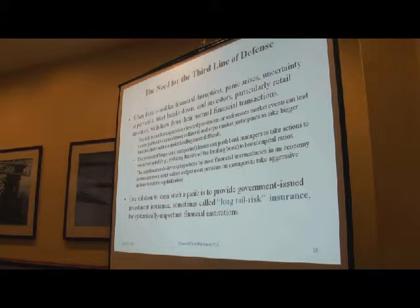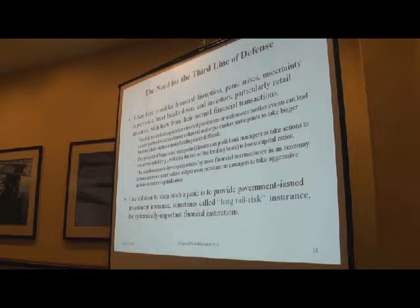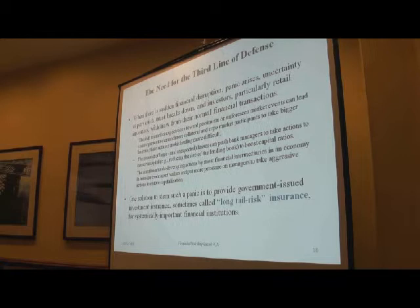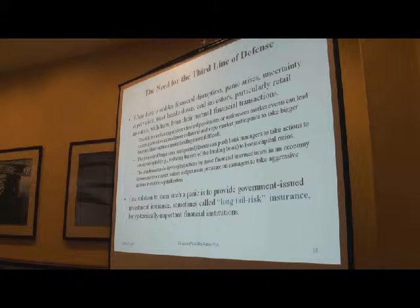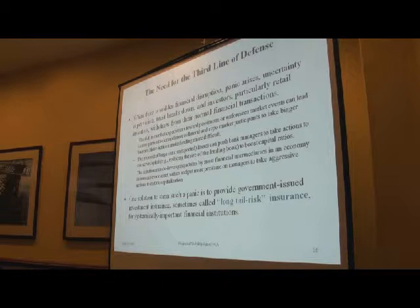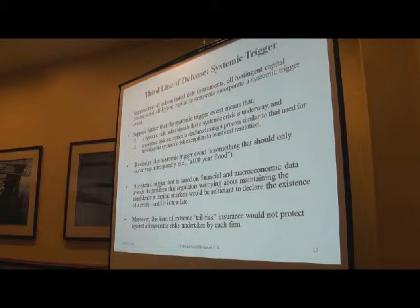For sudden financial disruption where panic arises, uncertainty is pervasive, trust is breaking down, and investors — particularly those who are guarantee-sensitive — are withdrawing from normal financial transactions, you're going to need more capital in the financial system. Good firms and bad firms will all need more capital because the financial system is at risk. In those circumstances, what we need is some form of long-tail risk insurance. The third line of defense is this idea of a systemic trigger.